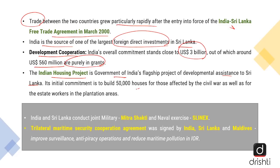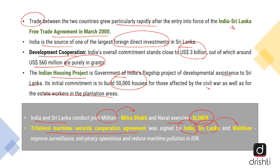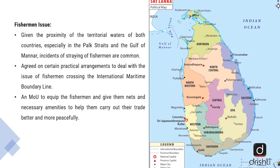India has committed to building around 50,000 houses for those affected by the civil war as well as for the estate workers in the plantation area. On the defense relationship, India and Sri Lanka jointly conduct the military exercise Mitra Shakti and also the naval exercise Slinex. There is also a trilateral maritime security cooperation agreement signed by India, Sri Lanka and the Maldives, aimed at improving surveillance, anti-piracy operations and reducing maritime pollution in the Indian Ocean region.